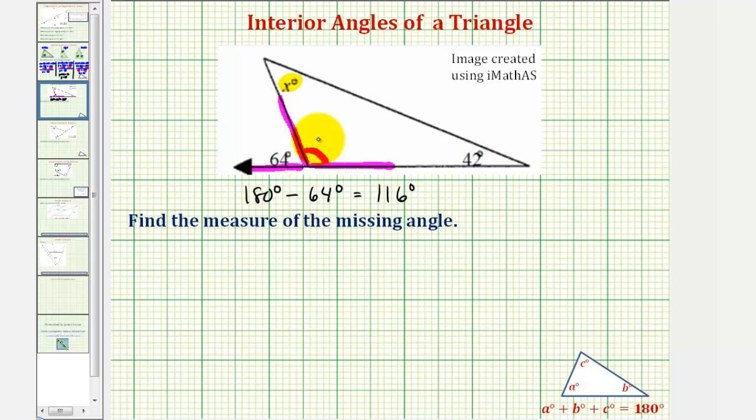So if this angle was 116 degrees, we can now use the fact that the sum of the interior angles must be 180 degrees. We can set this up as an equation as x plus 116 plus 42 must equal 180.